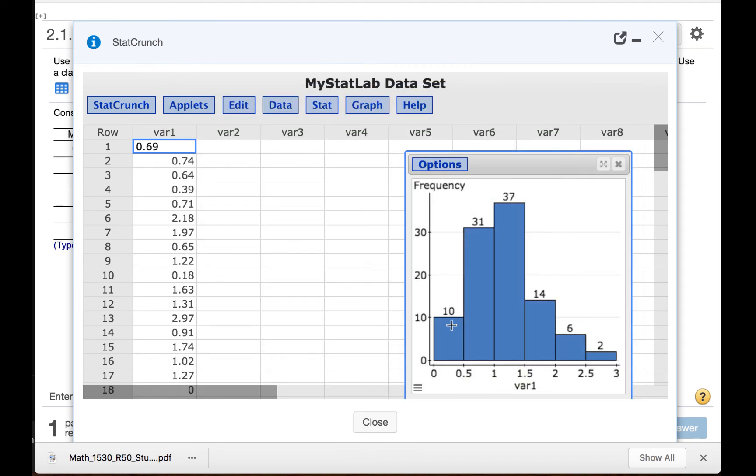Now we have the frequencies for each class listed above each of these bars. In other words, there were 10 items between 0 and 0.5, and then there were 31 items between 0.5 and 1.